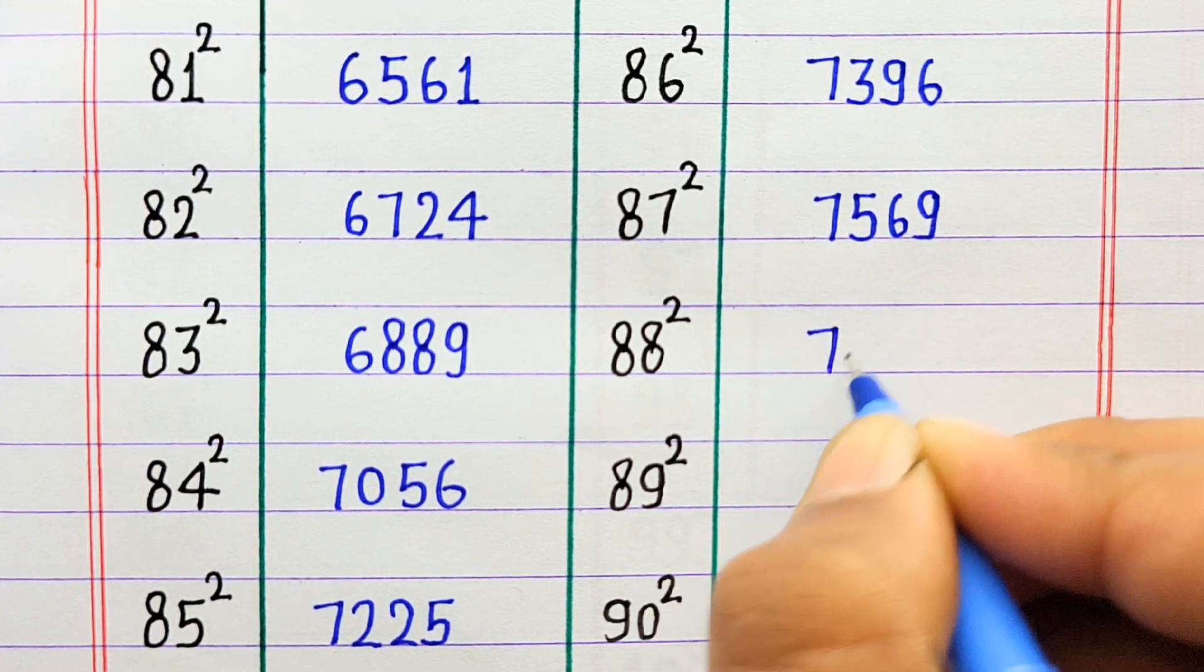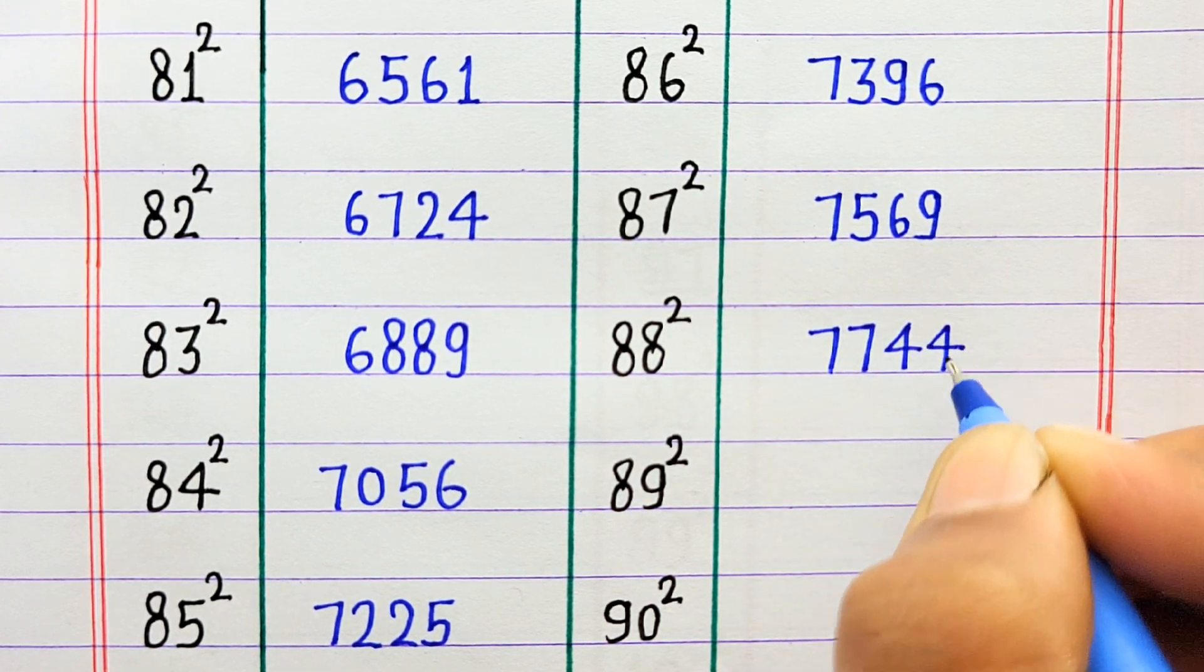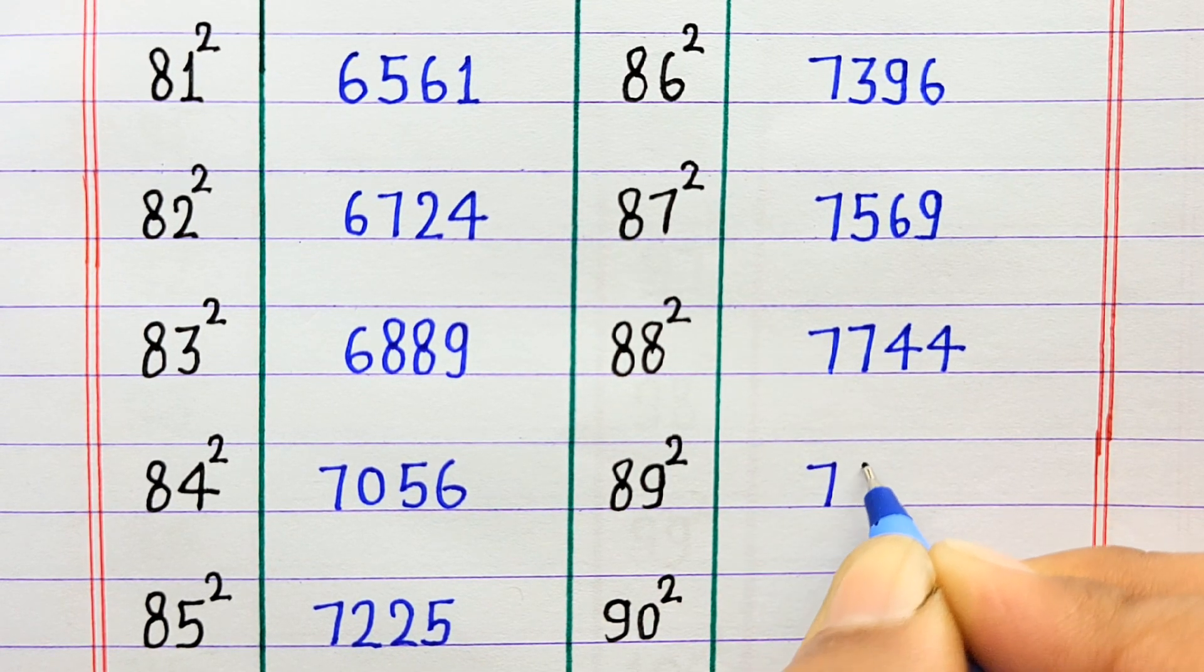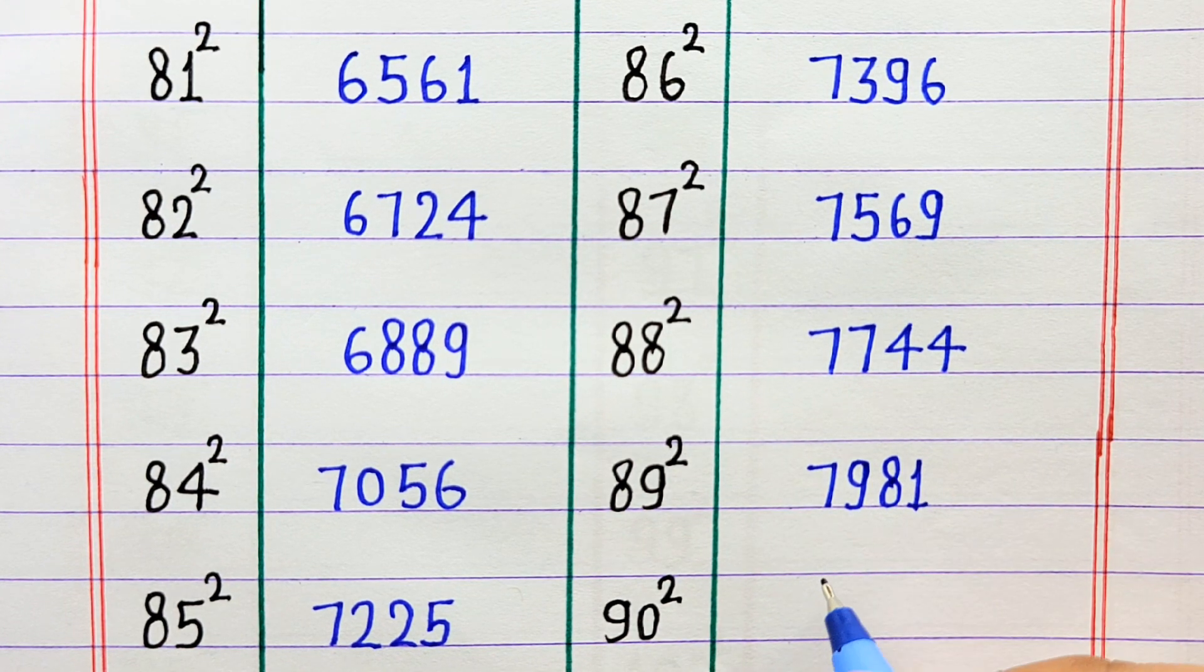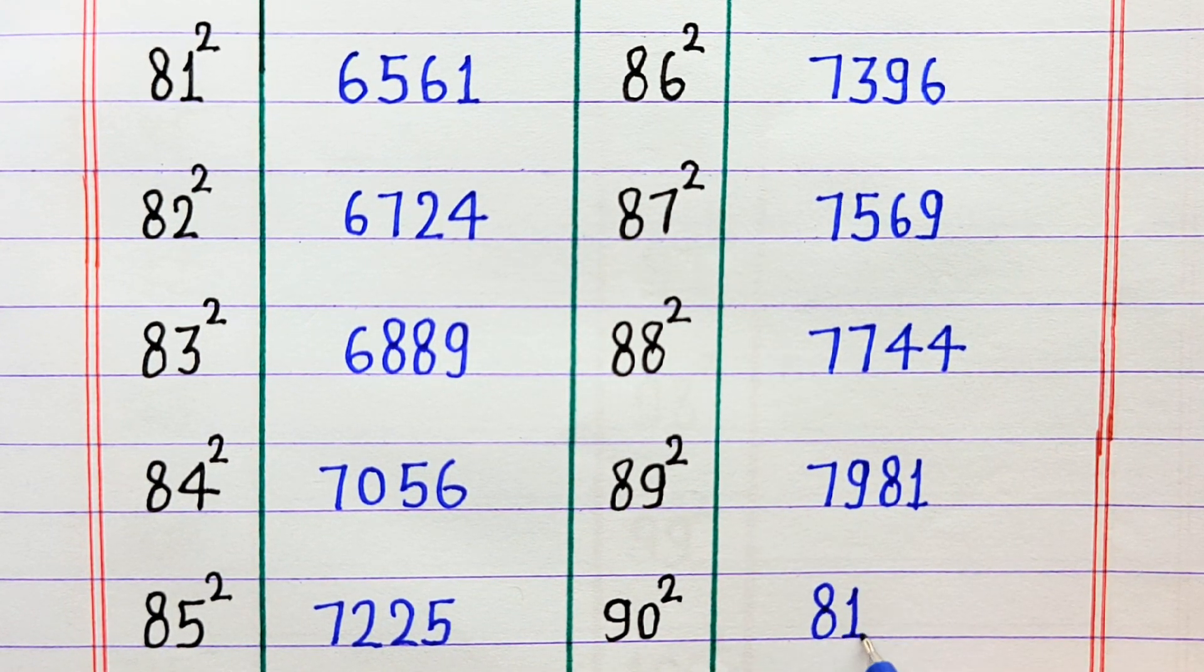88 ka square 7744, 89 ka square 7981, 90 ka square 8100.